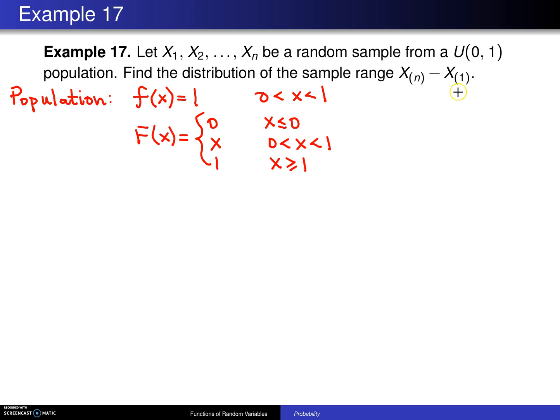Well, this is not an easy thing to calculate the distribution of. We're going to start by calculating the joint probability density function of the two order statistics that are involved in the sample range, which are namely x_(1) and x_(n).